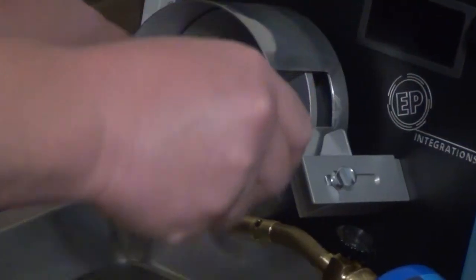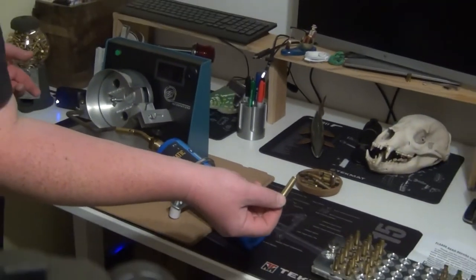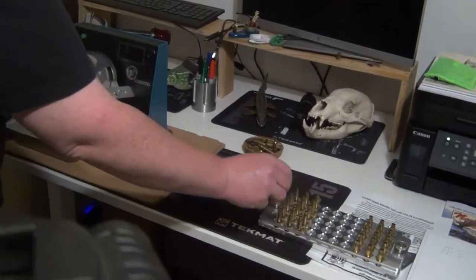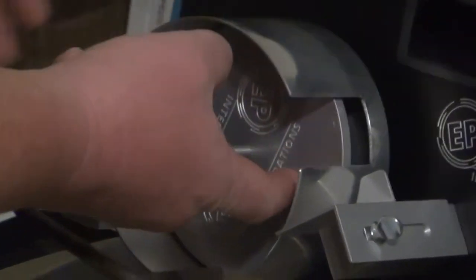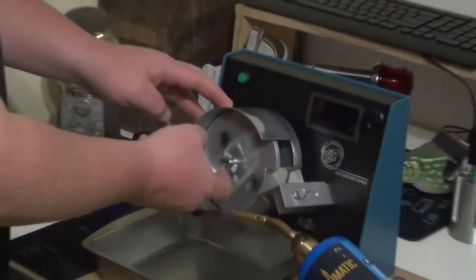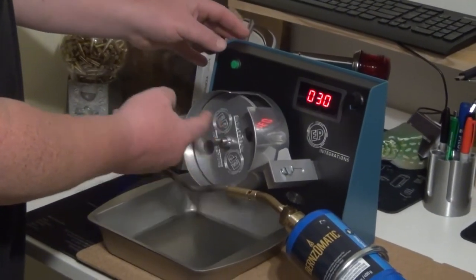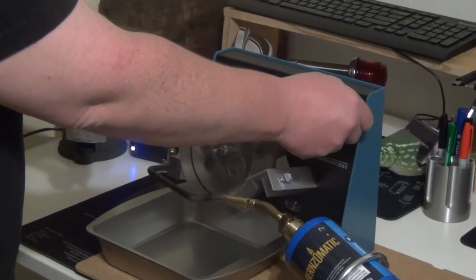In this video we're going to go from 223 and we're going to run some 6.5 Grendel. So what you want to do is have some test brass that you don't care about to kind of decide what kind of time you want for it to be in the flame. This machine will turn, you can adjust it faster, you can adjust it slower.